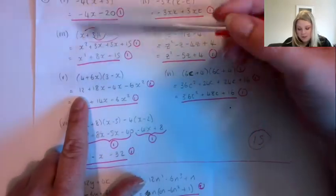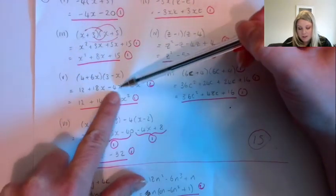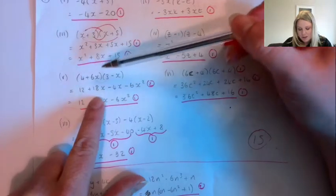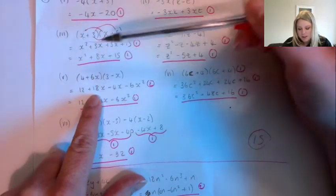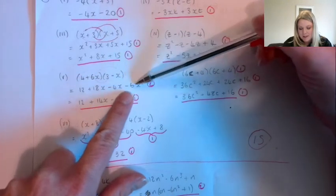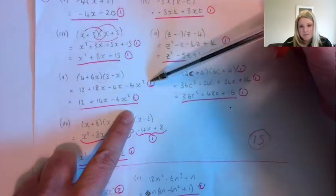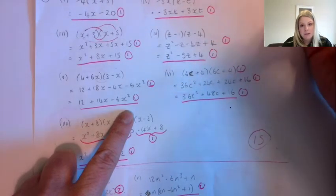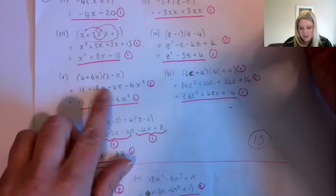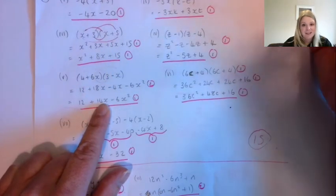Same again with FOIL: 4 times 3 gives us 12. Outer: 4 times minus x gives us minus 4x. Inner: 6x multiplied by 3 is 18x. And last: 6x multiplied by minus x is minus 6x squared. Again, a lot of people would have got that expansion line right but then made a silly mistake with pluses and negatives when gathering together. So 18x minus 4x gives us 14x — a lot of people were forgetting that the negative was there.